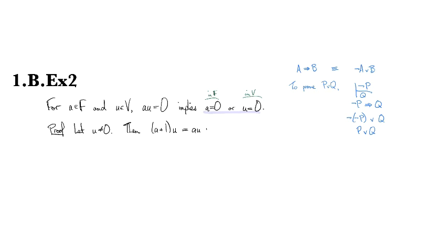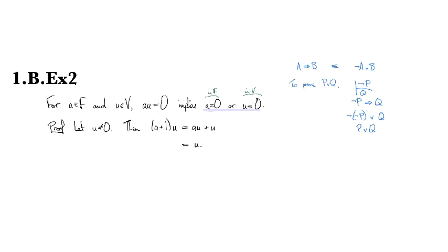Well, if we look in the field, if I do (a+1) times u, then that's going to give me a·u plus u. The reason that I did that is just because it would make this copy of a·u appear, and then I know that that's going to be equal to zero. So that is just going to be u. Maybe I can actually emphasize that this is 1 times u.